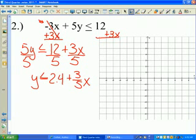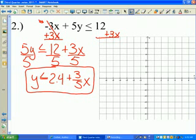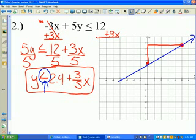12 divided by 5 is 2.4 plus 3 fifths x. So 2.4, 2.4 is where I'm going to start. And 2.4 is roughly between 2 and 3. So I'm going to put a point there. And I'm going to go up 3. That's 1, that's 2, that's 3. And I'm going to go over to the right 5.